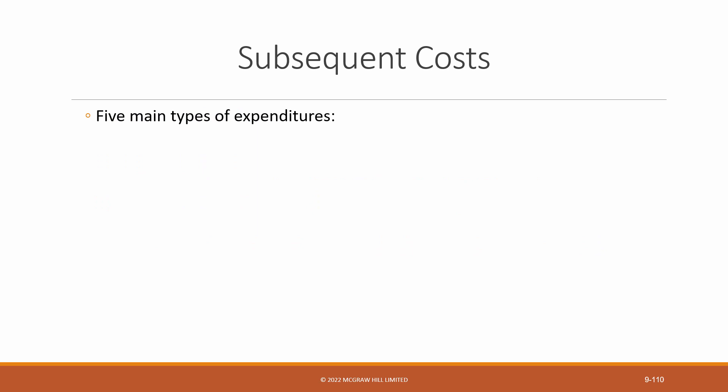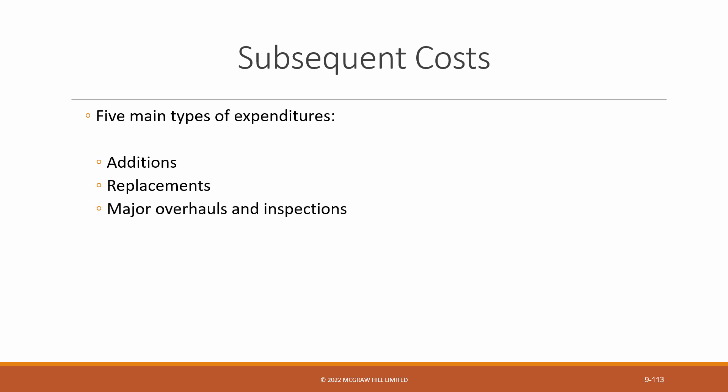There are five major types of post-acquisition costs. Additions, costs which increase or extend the original asset. Replacements, which are when a new part or component is substituted for an old one. Major overhauls and inspections, which are really self-explanatory. Rearrangements and reinstallation, which is when we move assets from one place to another. And finally repairs, which are servicing costs, costs which we incur to keep assets in good working condition.